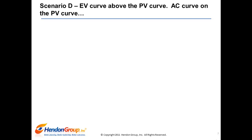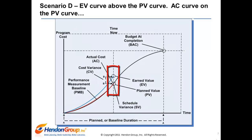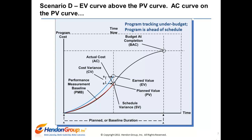In Scenario D, the earned value curve is tracking above the planned value curve while the actual cost curve is tracking on the planned value curve. This is the program sponsor's dream program status chart. Earned value tracking above the planned value curve communicates the program is ahead of schedule, and the actual cost curve tracking on the planned value curve — and below the earned value curve — communicates the program is under budget. Ahead of schedule and below budget is the ultimate and most desired program status. The program team should be rewarded for delivering this performance.